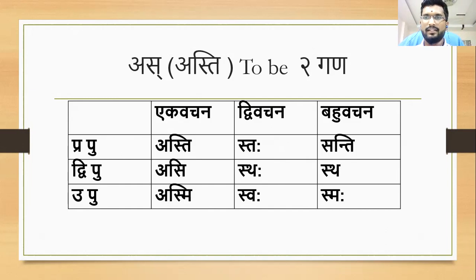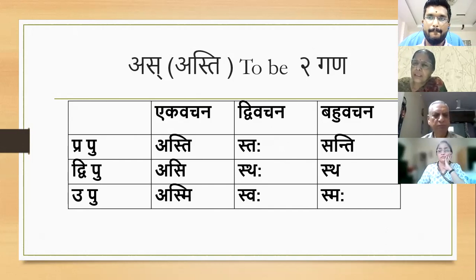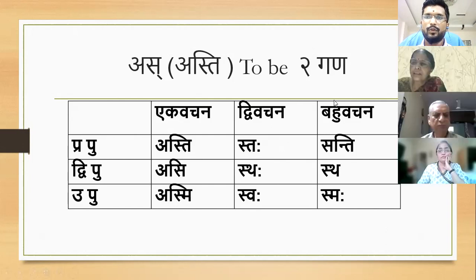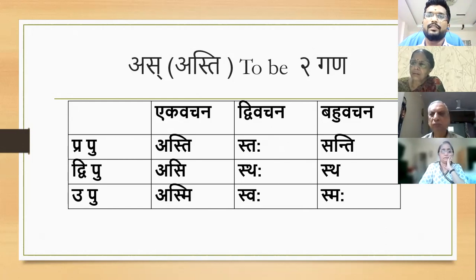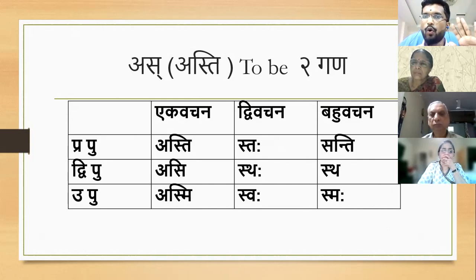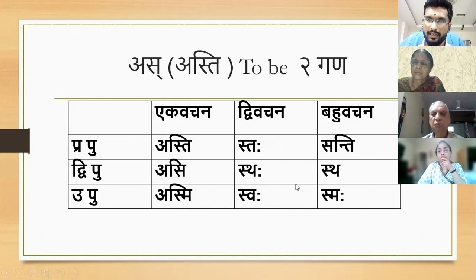Now Meenakshi ji will try. All will pay attention to how she is reading. Asti, Staha, Santi. Asi, Staha — Stha. Asmi, Swaha, Smaha. Like you want to say many balakas are there: Balakaha Santi — boys are there. Balakaha Santi. Balakau Staha — two. Balakahe Staha — two girls are there. Asti means 'to be' — Hona. Vayam Smaha — Ham sab hai. Aham Asmi — I am.